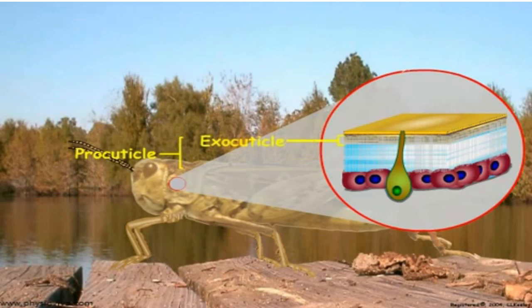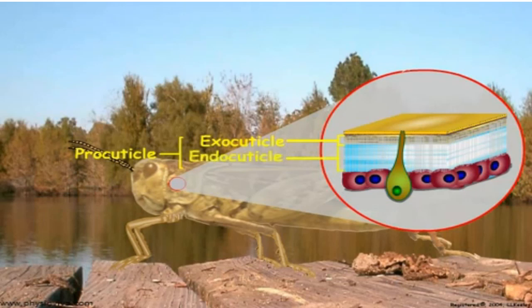Above the endocuticle is the exocuticle. The exocuticle is the layer that gives the cuticle its hardness and rigidity. Exocuticle becomes hard and rigid because it undergoes sclerotization or tanning. Sclerotization is the crosslinking of proteins by quinones derived from polyphenols. Sclerotization makes the exocuticle hard, strong, and insoluble so it is resistant to chemicals and mechanical damage and has low water permeability. Sclerotization differentiates the original procuticle into the endo and exocuticles.